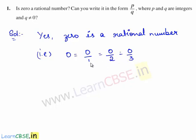Here the denominator can also be negative. Therefore, 0 can be written in the form of p by q where p and q are integers and q is not equal to 0.